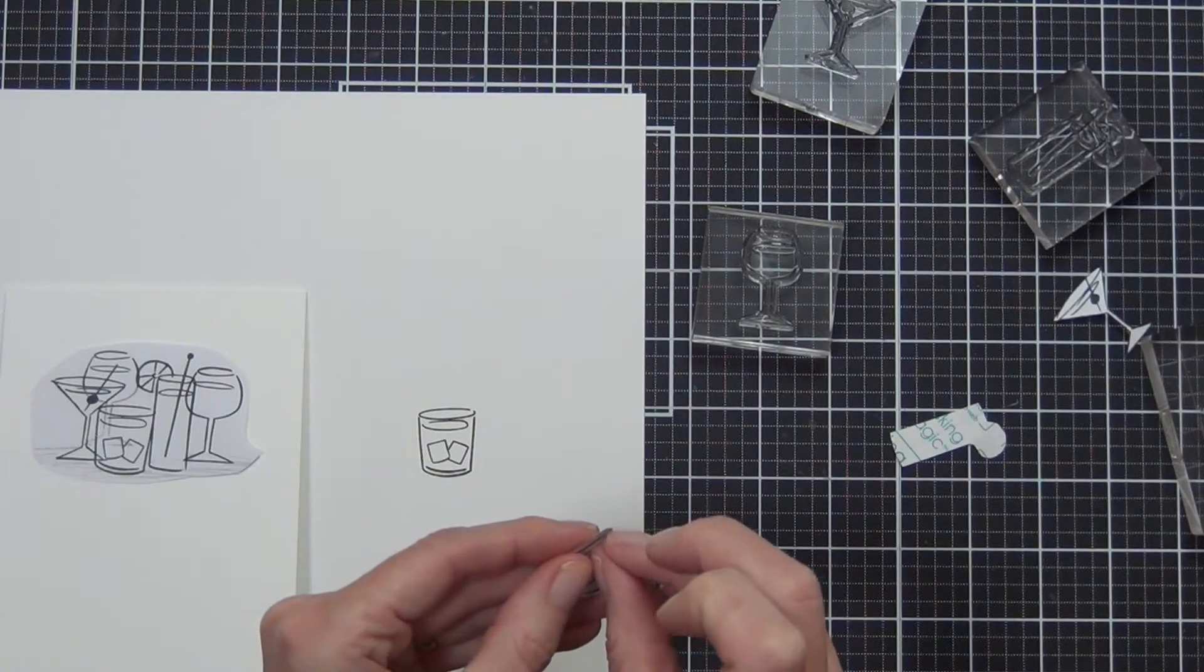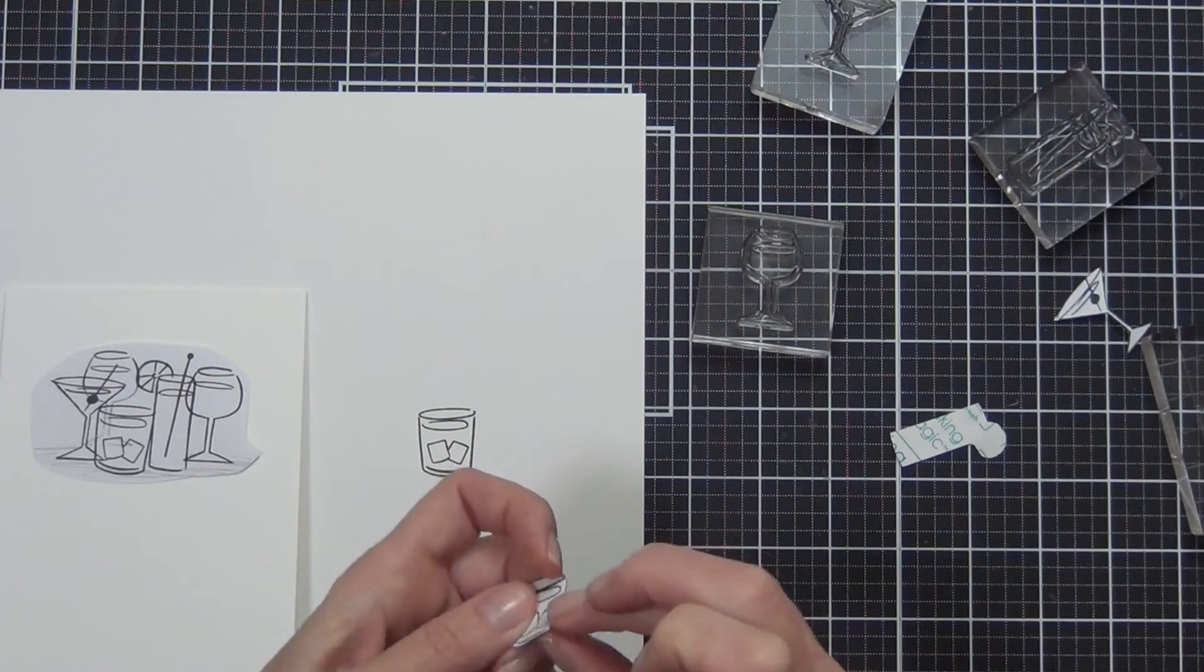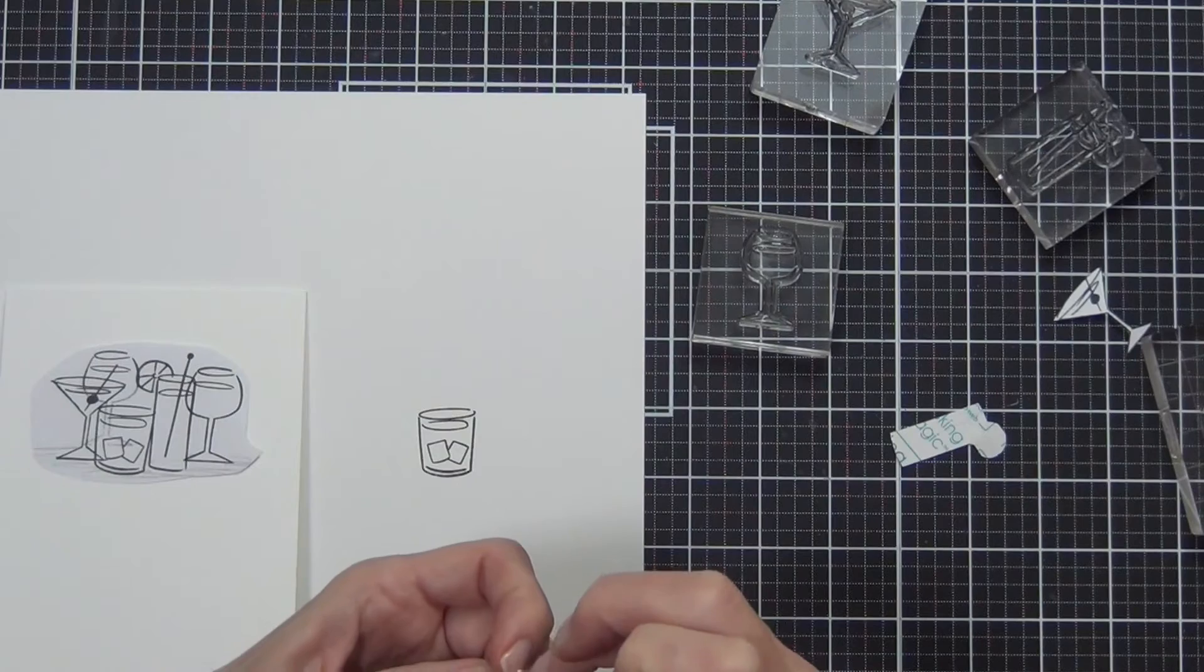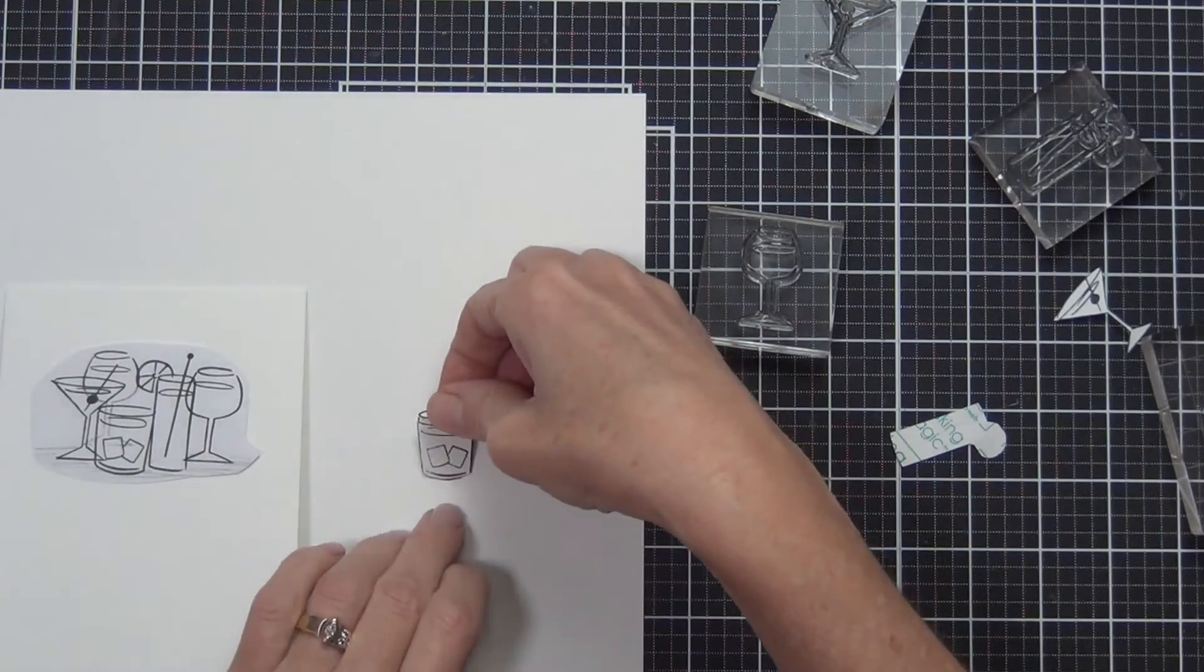When you're going to stamp multiple images, the image that is at the very front is the one that you need to stamp first and the one that you need to mask.